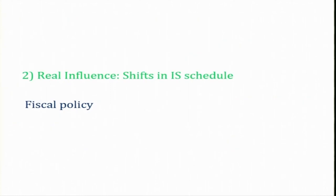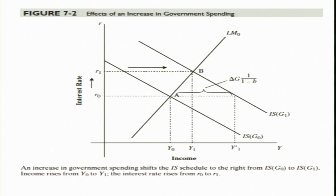Another point — what about the real influence, when there is a shift in the IS schedule, what is going to happen? Due to fiscal policy — for example, an increase in government expenditure — the IS curve will be shifting rightwards. What we are showing here is that the IS curve is shifting rightwards. The initial equilibrium position is A. When there is an increase in government expenditure, the IS curve will shift rightwards and the new equilibrium position will be at the intersection of the new IS curve with the initial LM curve at point B.